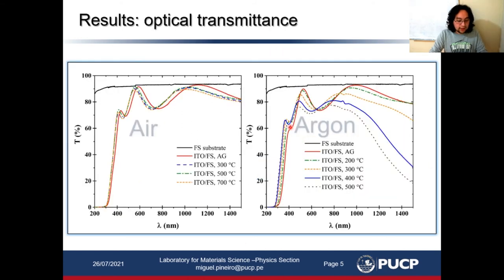Now I will show the main results. First, we measure the optical transmittance of ITO samples at different annealing temperatures in air and argon. We can see ITO samples in air atmosphere don't present significant change in transmittance compared with ITO samples in argon atmosphere. The transmittance in the infrared region decreases and the absorption edge shifts toward higher energy.